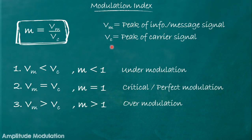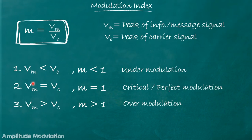These values are variable. Let us consider the possible values of modulation index. Case 1: if vm < vc, numerator is less than denominator, so modulation index is less than 1 — this is called under modulation. Case 2: if vm = vc, modulation index m = 1 — called perfect modulation or critical modulation. Case 3: if vm > vc, modulation index is greater than 1 — called over modulation.